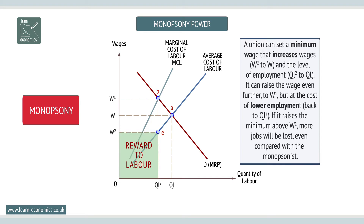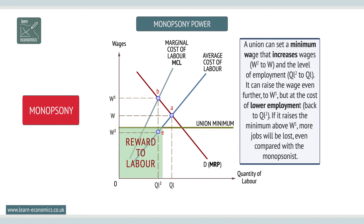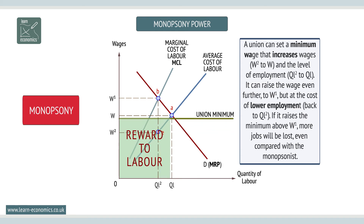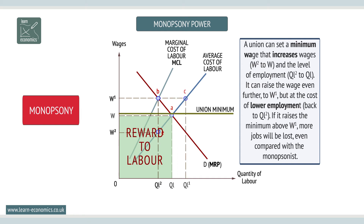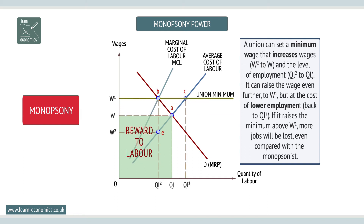The impact of a union minimum wage. A trade union can set a minimum wage to counteract a monopsonist. The minimum here increases wages from W2 to W, and the level of employment from QL2 to QL. It can raise the wage even further, to W1, but at the cost of lower employment, back to QL2.